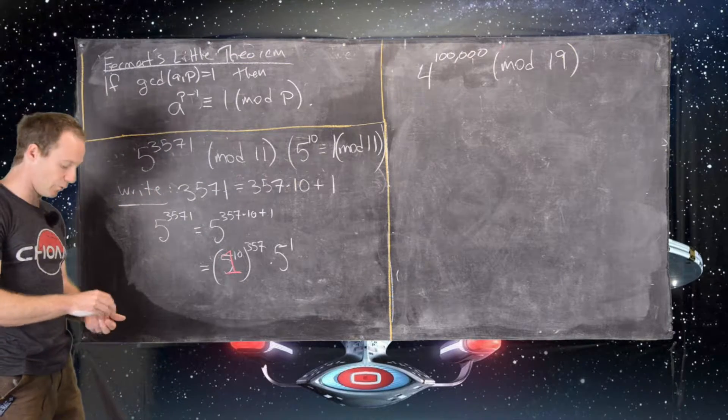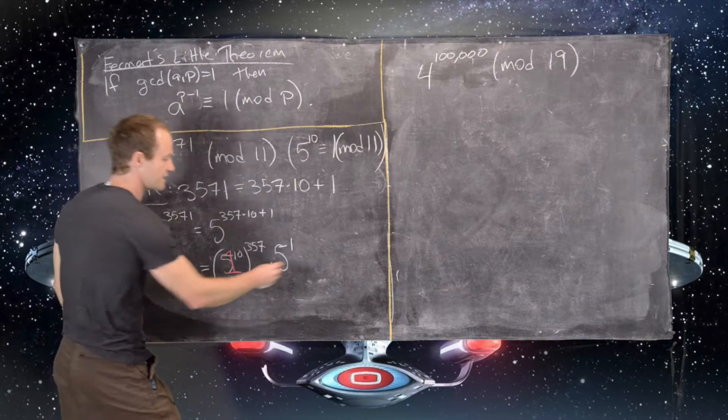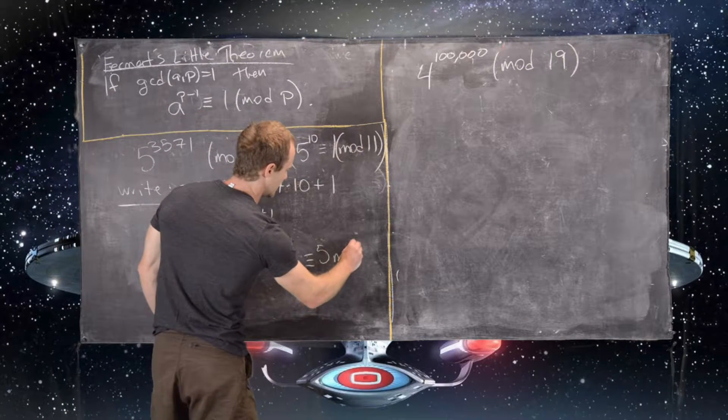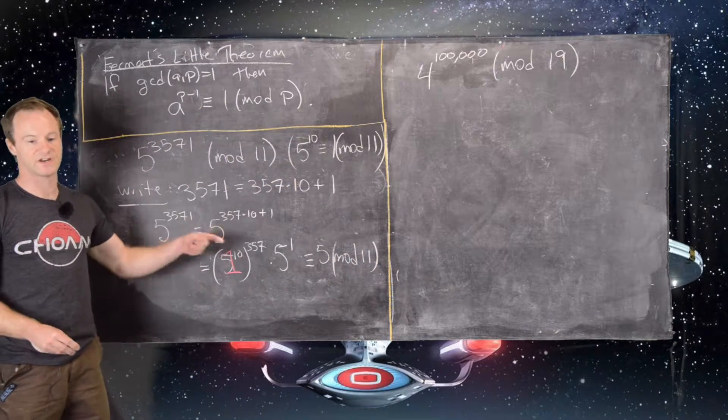So we can replace that with 1 to the 357 power, which is just 1. So that means this is all congruent to 5 mod 11. That finishes that example.